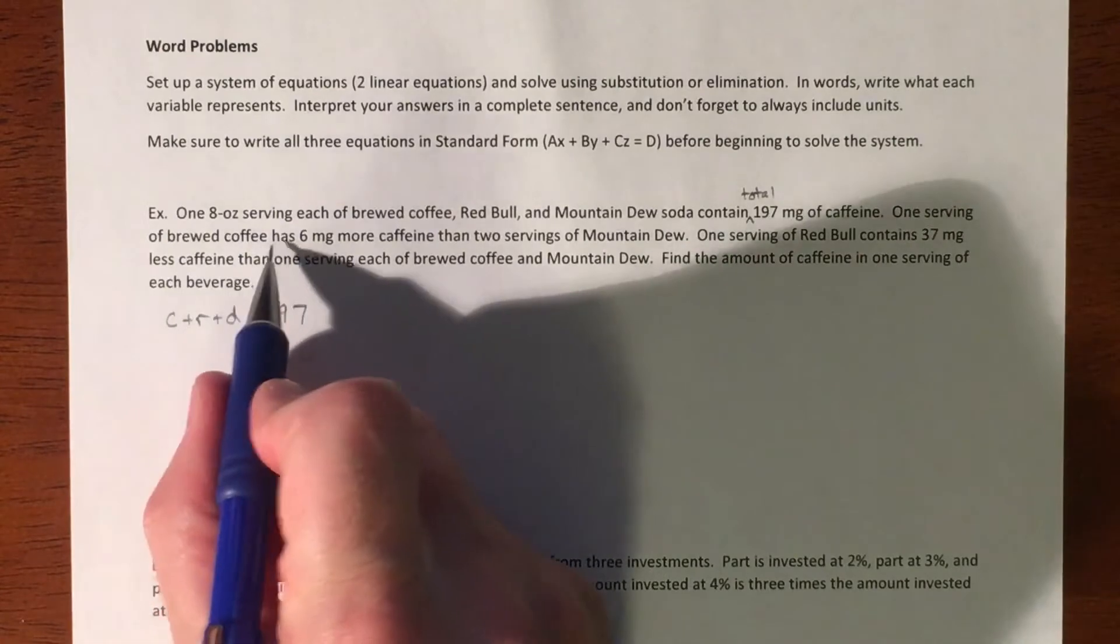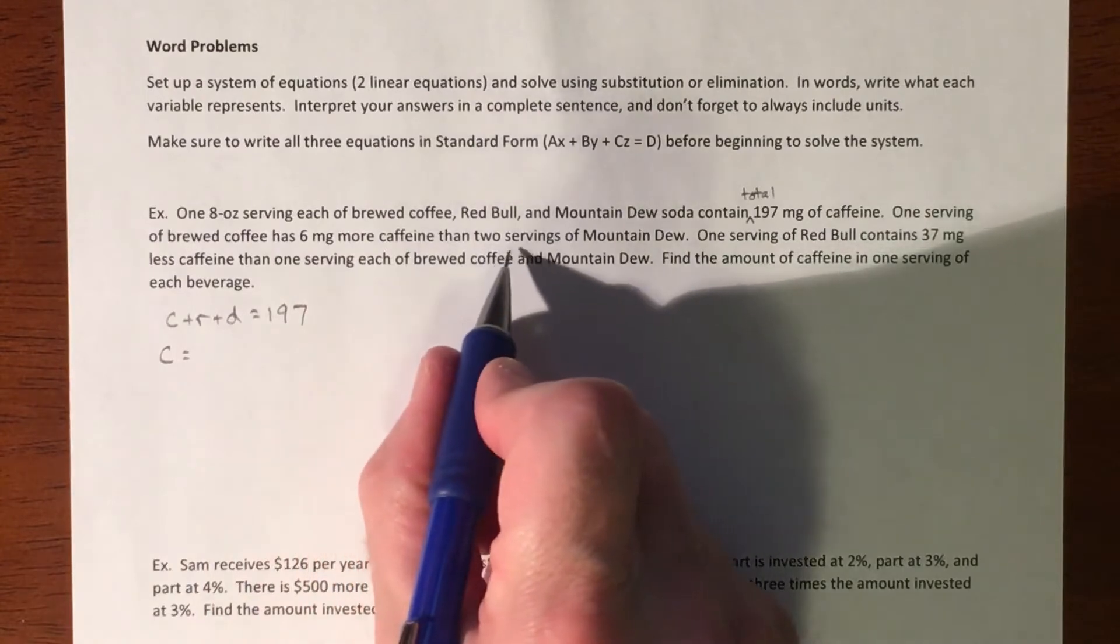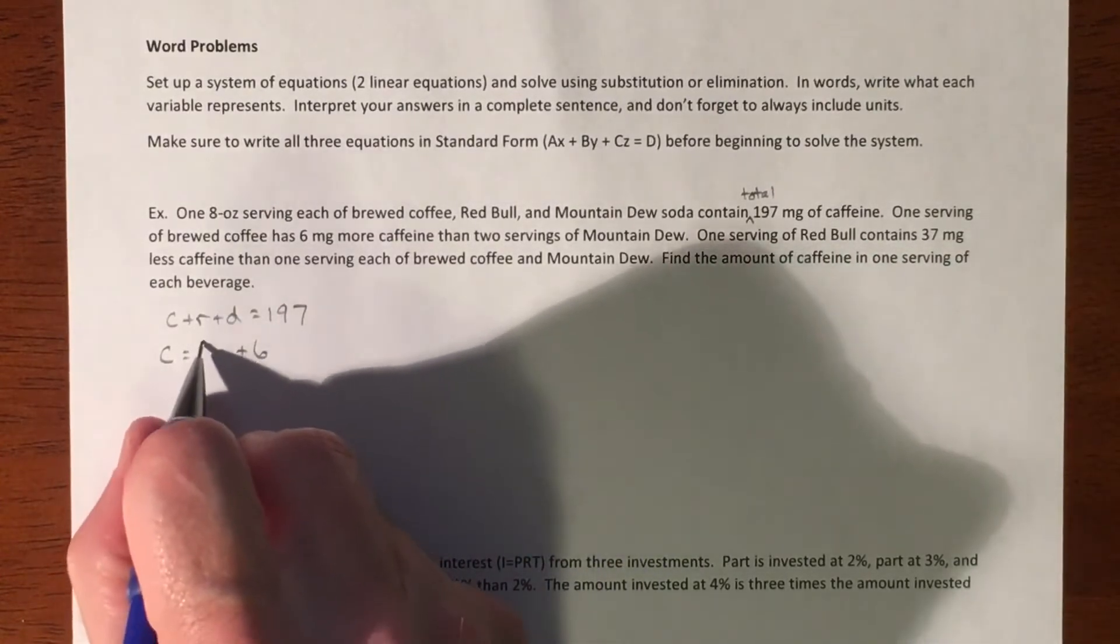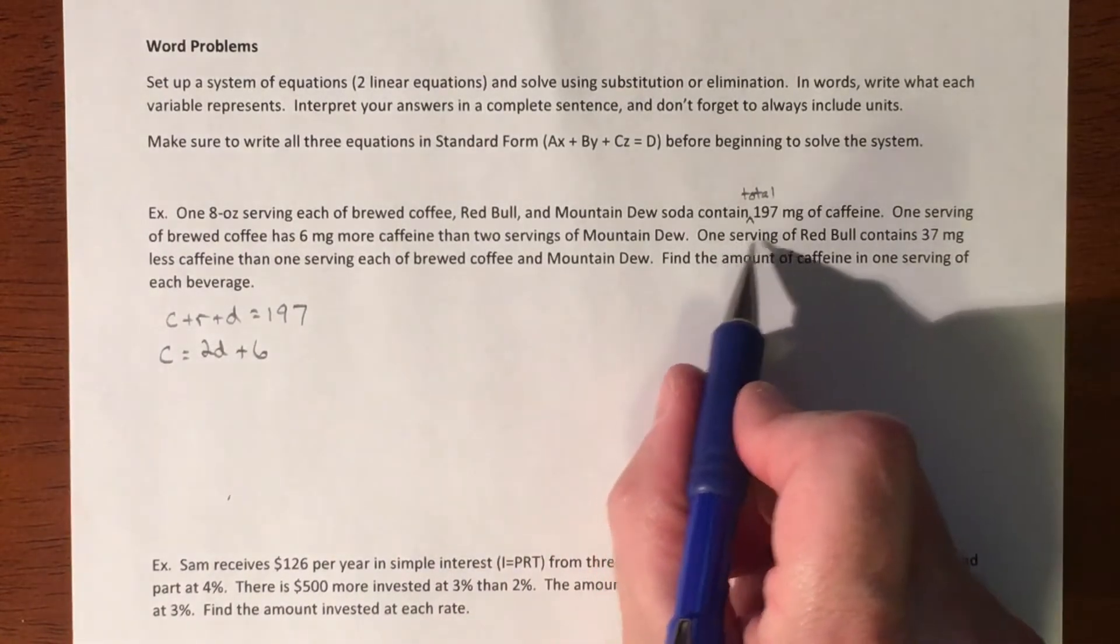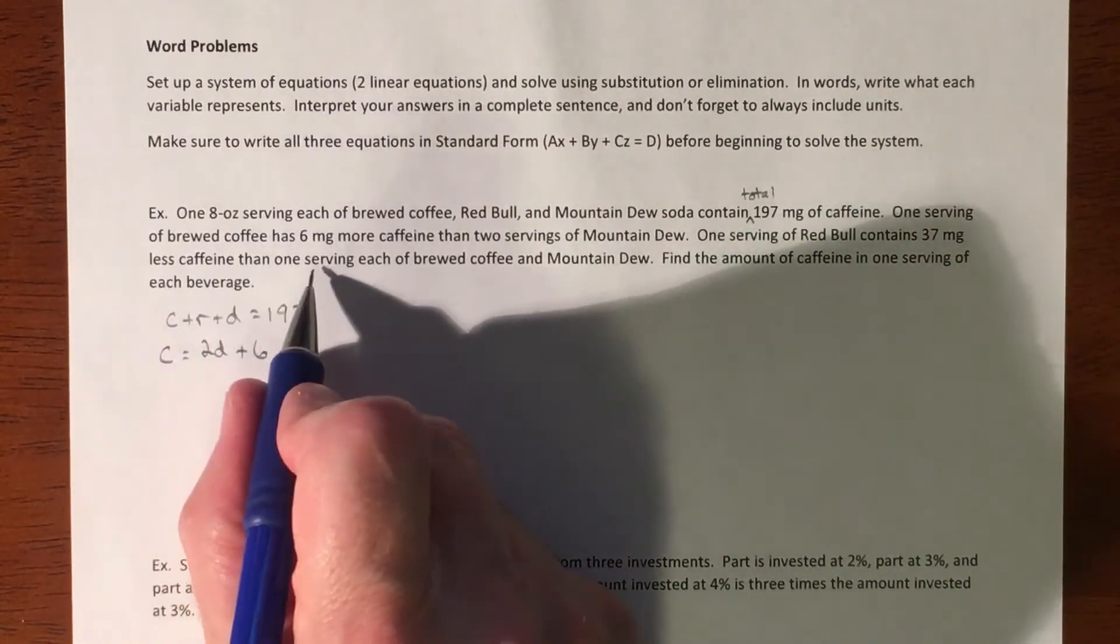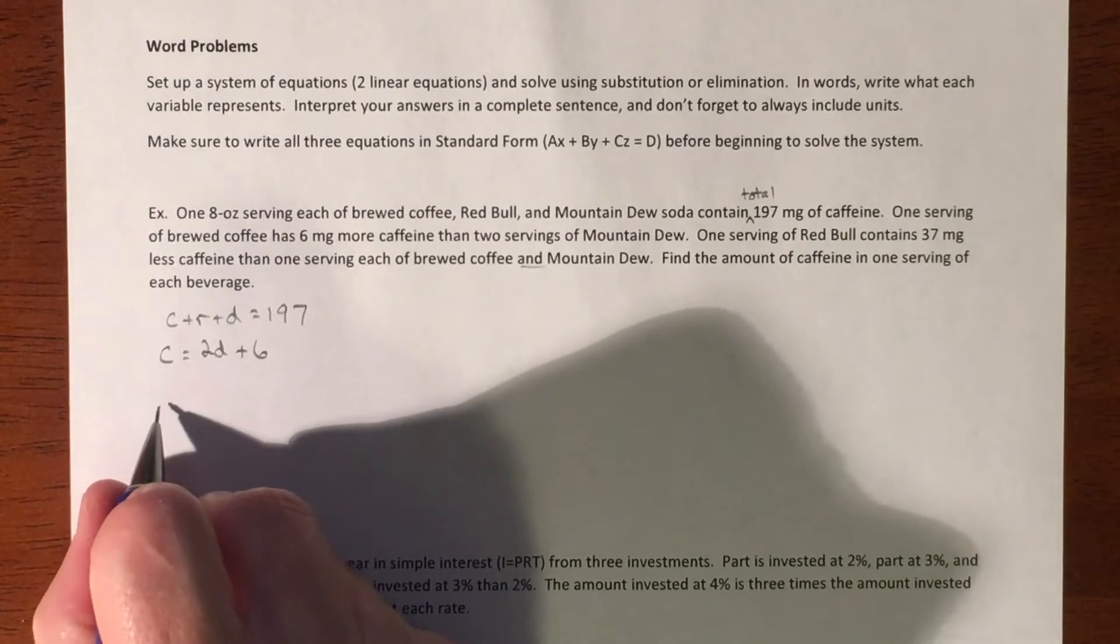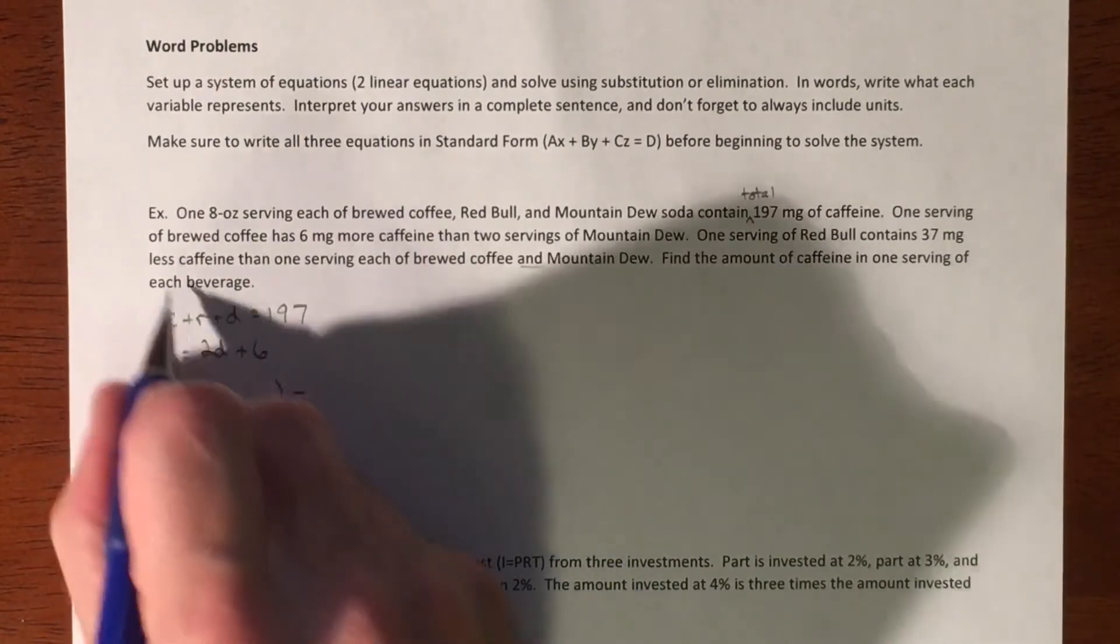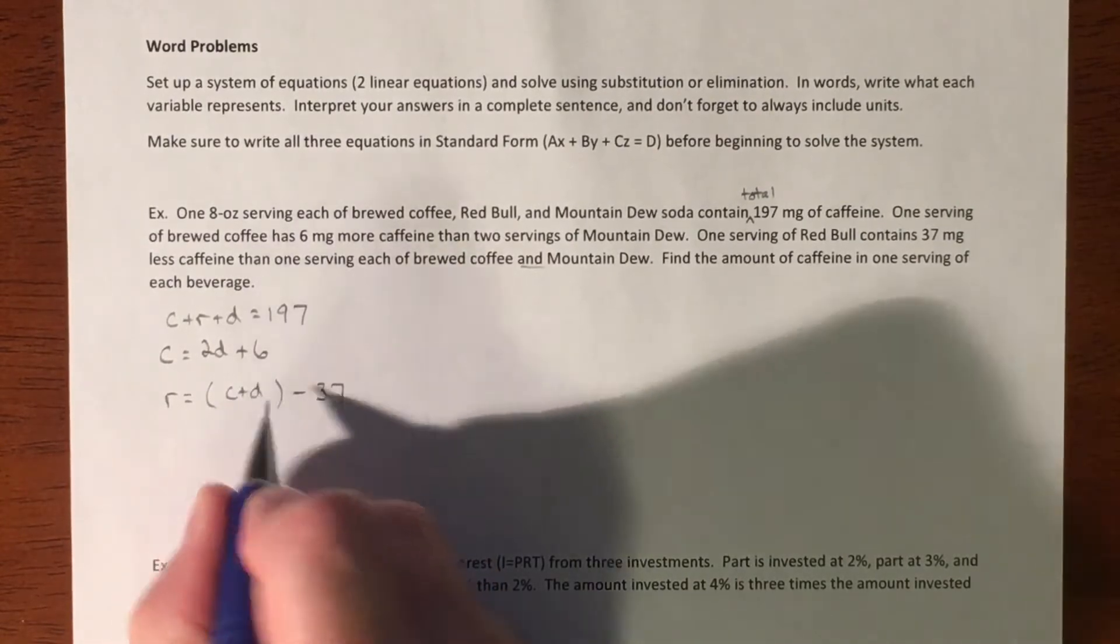And then one serving of brewed coffee has six milligrams more caffeine than two servings of Mountain Dew. So more than, so whatever Mountain Dew has plus six more, so two Mountain Dews plus six. And then you have one serving of Red Bull contains 37 milligrams less caffeine than one serving each of brewed coffee and Mountain Dew. So the and means we're going to combine them together. So your Red Bull is the combination of those two and then less 37. So coffee plus Dew.